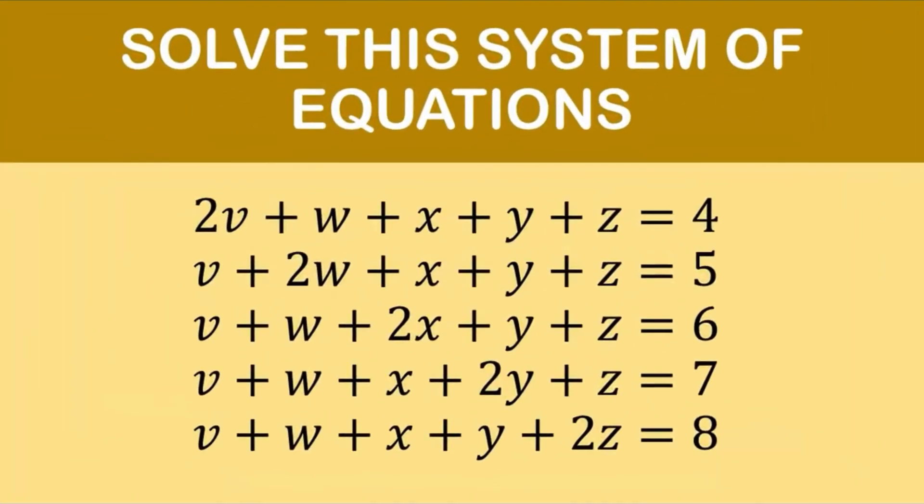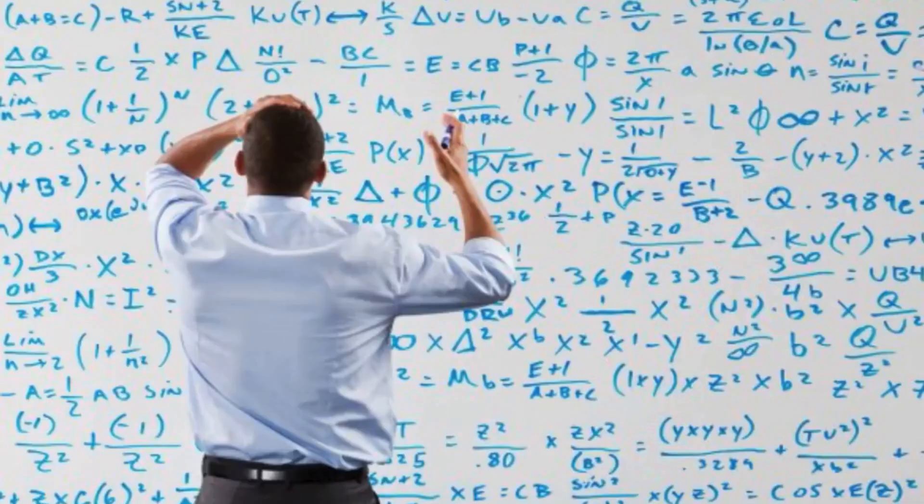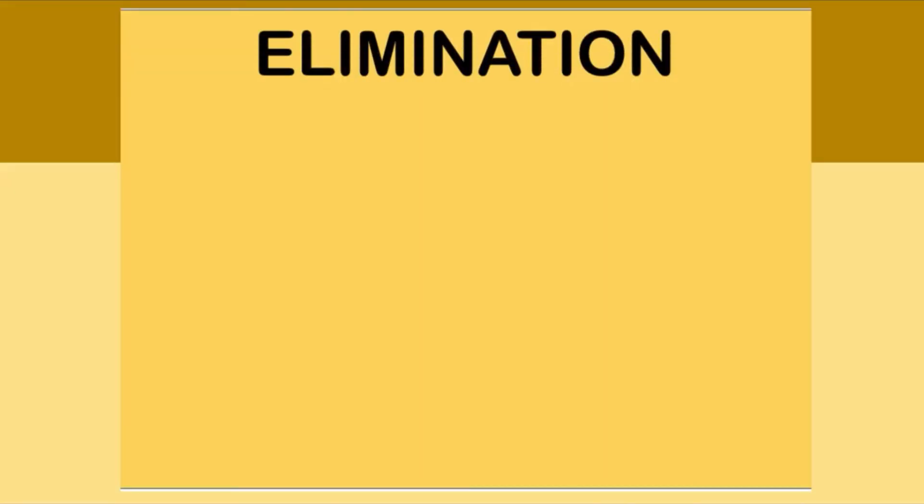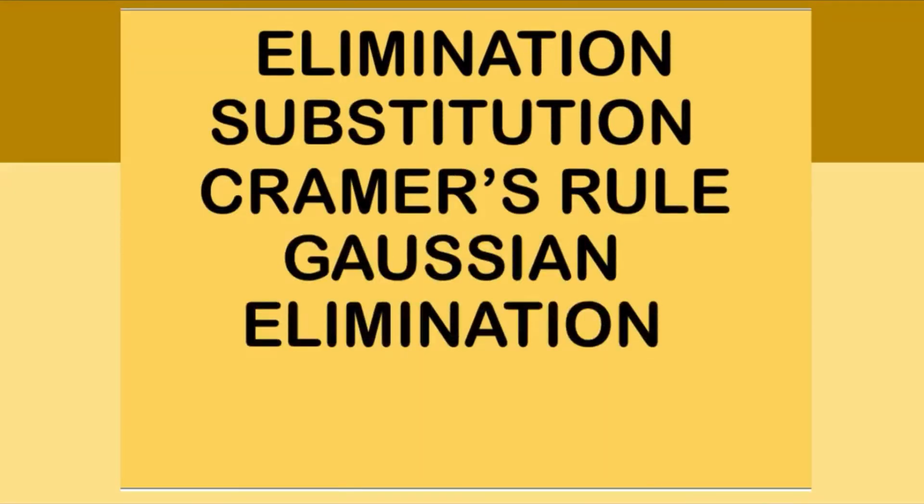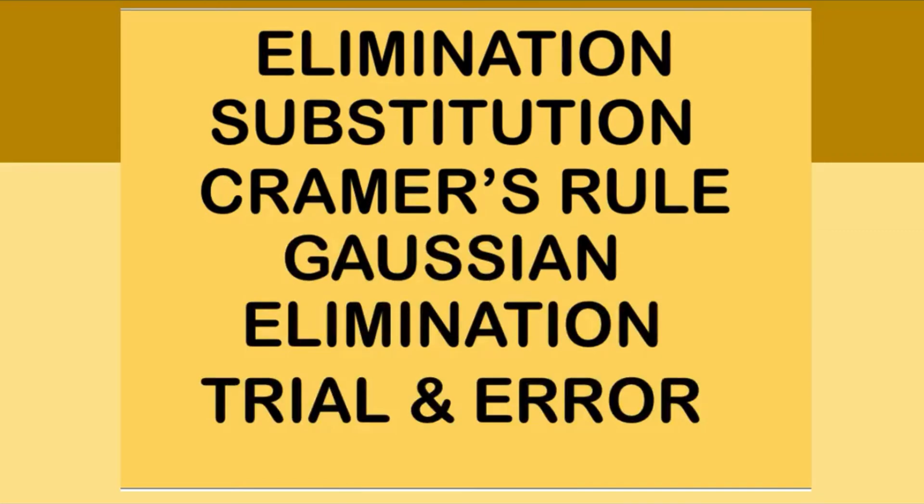Hi everyone. Solving systems of two equations in two unknowns could be a tedious task. You can use either elimination method, substitution method, Kramer's rule, Gaussian elimination, or even trial and error.